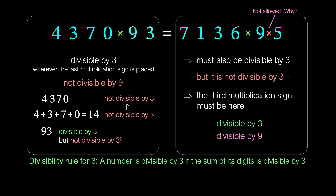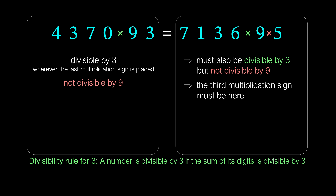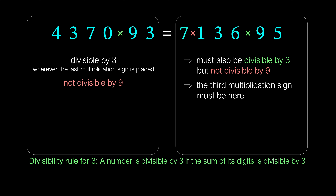Thus, when we place the third multiplication sign on the right, we must get a number on the right that is divisible by 3 but not by 9. We cannot place it between 9 and 5 because we would get a factor of 9, making the right side divisible by 9. We cannot place it between 1 and 3 because we would get a factor of 36, which is divisible by 9. If we place it between 7 and 1, we will not get divisibility by 3, since 7 is not divisible by 3, 136 has digit sum 10 (not divisible by 3), and 95 is not divisible by 3.